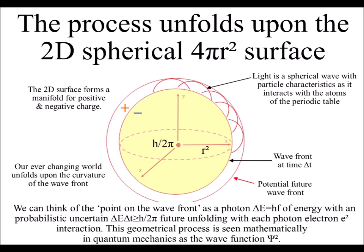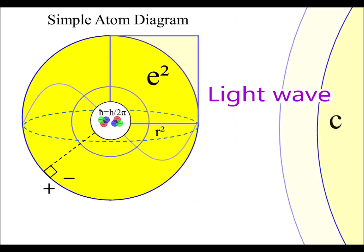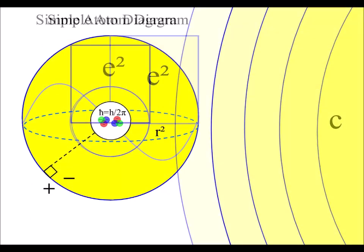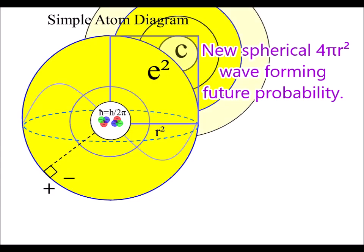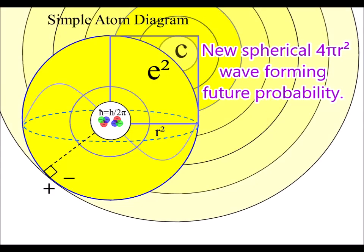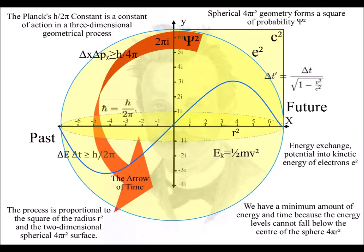Each point on the curvature of the wavefront forms the potential for a new light photon of energy, a new oscillation or vibration as the future unfolds. We have to square the radius of the sphere because the process is unfolding on the spherical surface.